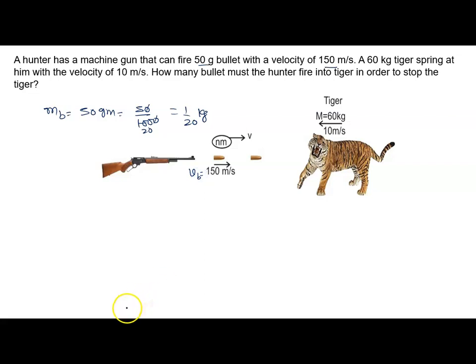A 60 kilogram tiger springs at him with a velocity of 10 meters per second. The question is: how many bullets must the hunter fire into the tiger in order to stop the tiger?